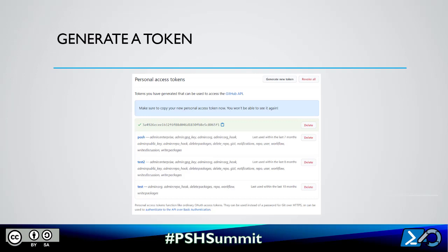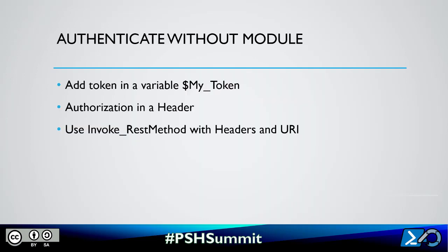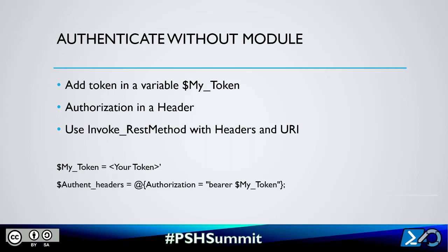Now you have the token, you can get information about the authenticated user. To authenticate to your GitHub account without a module, you have to add the token. I created a variable in which I add my token. Then I add the token in a header with the authentication bearer. Then just use invoke-rest-method with the header parameter and your array, pointing to the user resource.